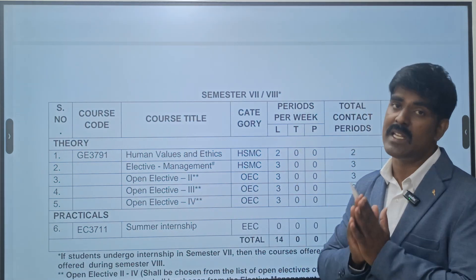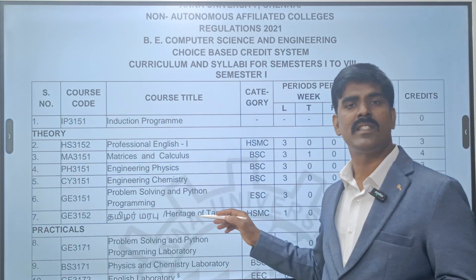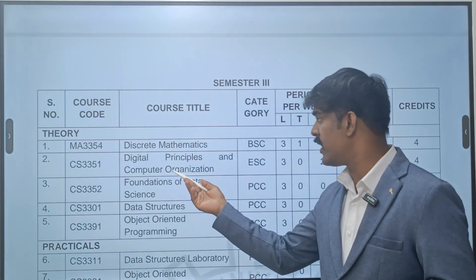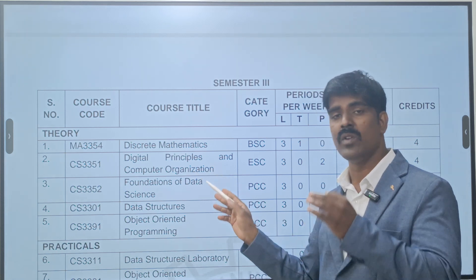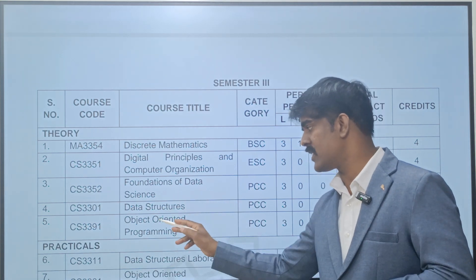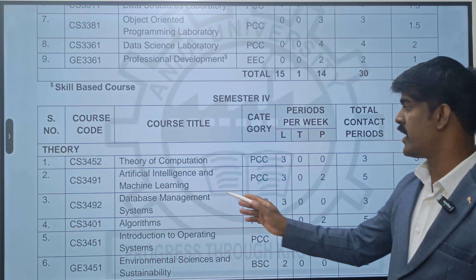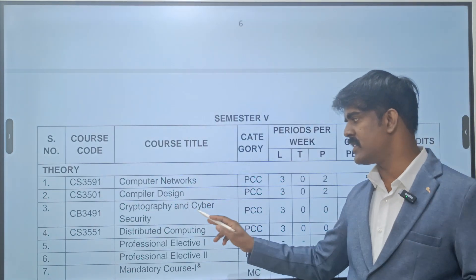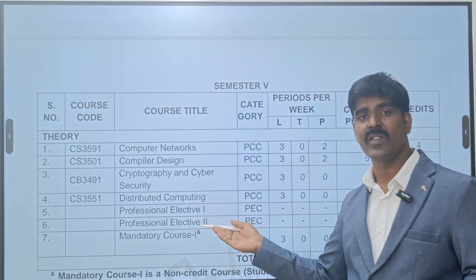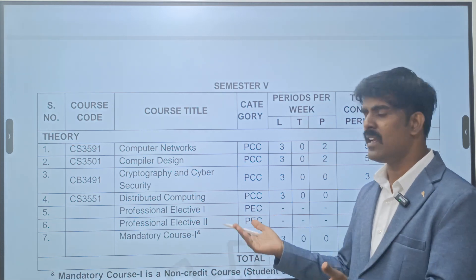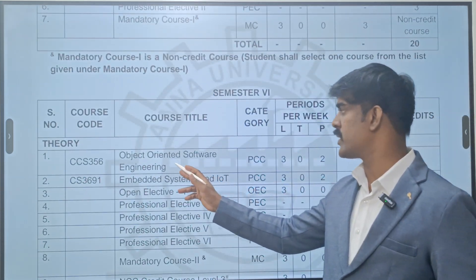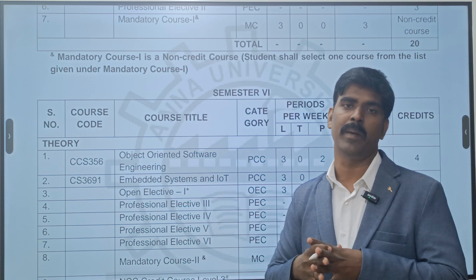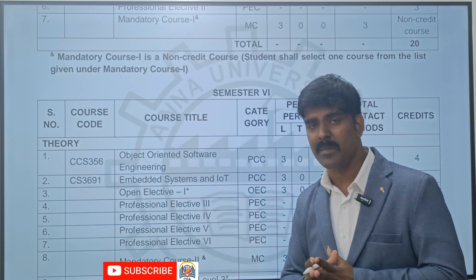For Computer Science, again the first and second semesters have common subjects. From the second year, third semester, you start your main core CSE subjects - digital principles and computer organization, foundations of data science, data structures, and object-oriented programming (OOP). In the fourth semester you study AI, database management systems, and algorithms, which are core for CSE. In the fifth semester you study computer networks, compiler design, cryptography and cyber security, distributed computing, and professional electives like web technology.